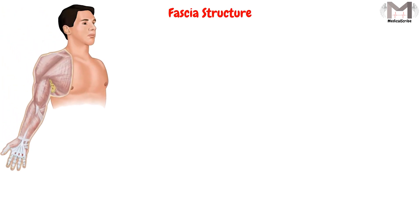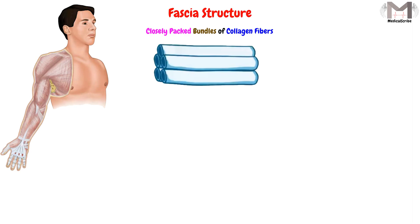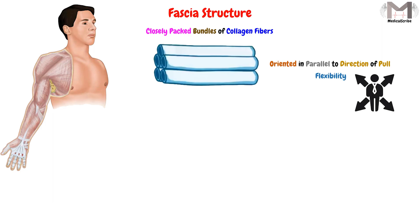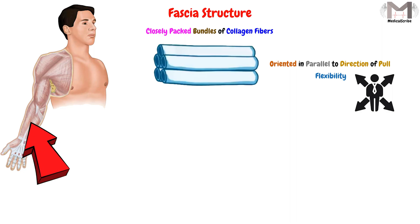Now we have to talk about the structure of fascia. In fact, the fascia contains a closely packed bundle of collagen fibers. These bundles of collagen fibers are oriented in parallel to the direction of the pull. So this orientation will help the fascia in its flexibility when a force like a pull is applied on it, because the fascia bundles' direction is in parallel with the direction of the force.